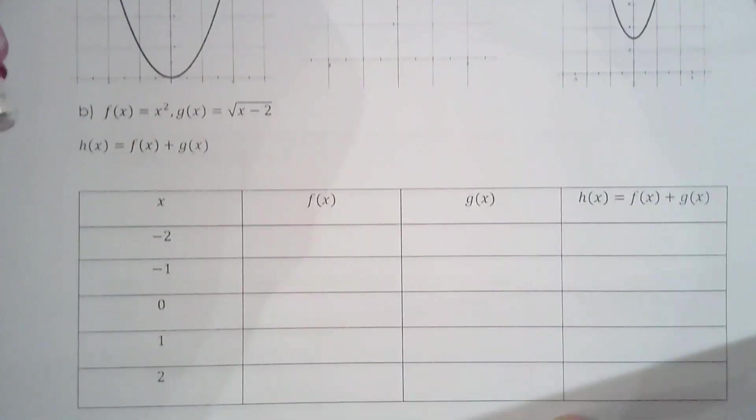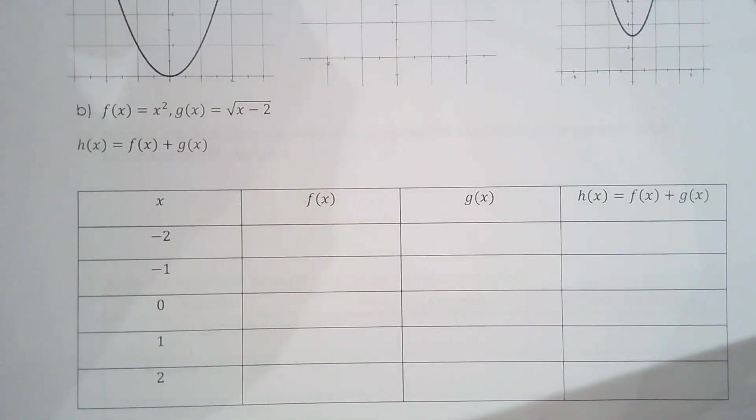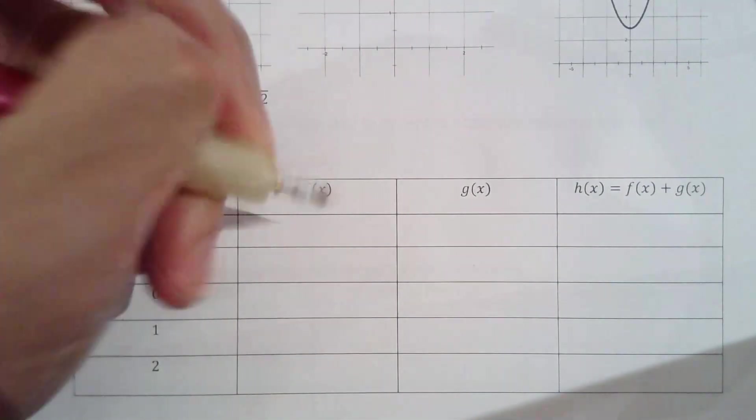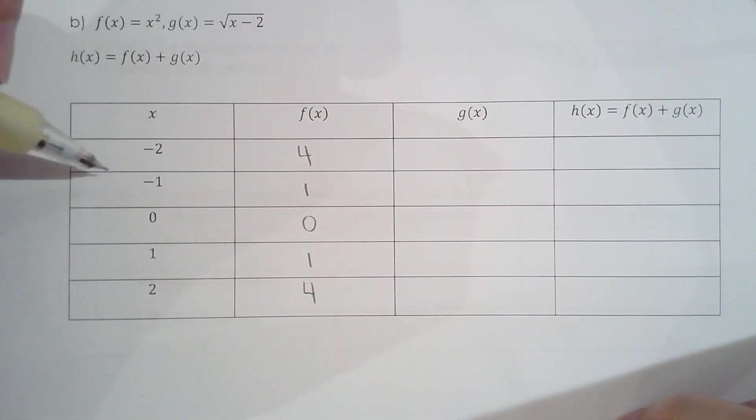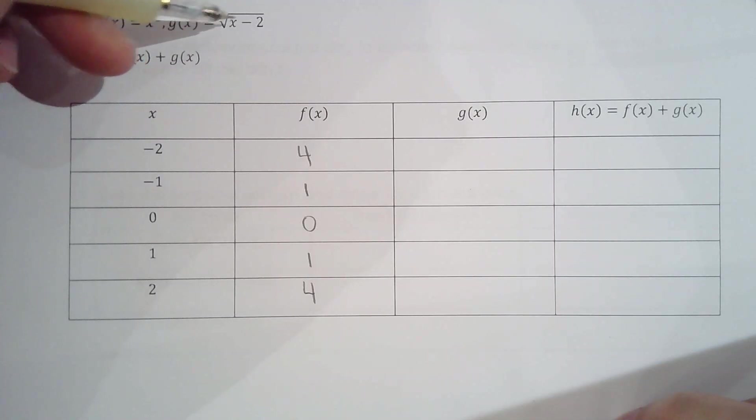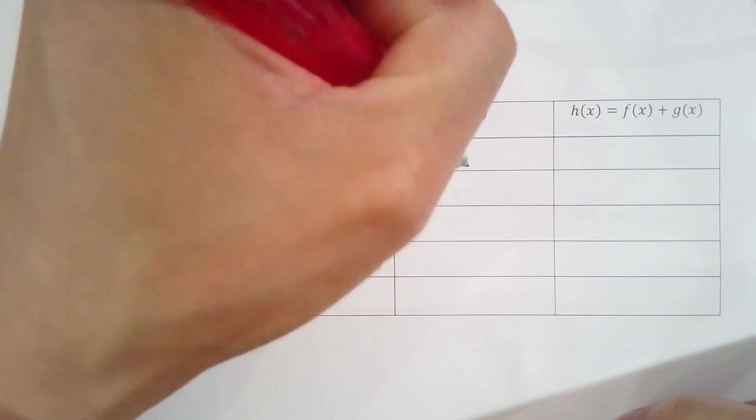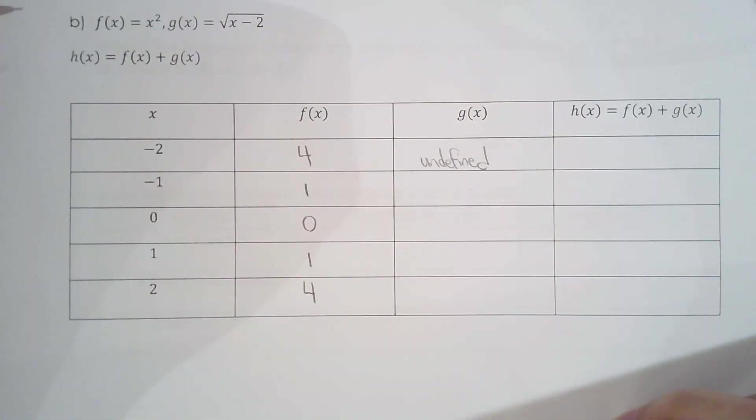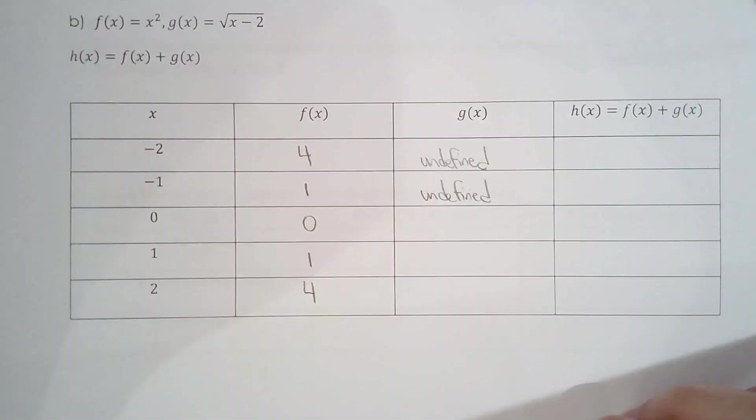What if we have f of x is x squared and g of x is the square root of x minus 2? f of x, once again: 4, 1, 0, 1, 4. And g of x: g of negative 2, negative 2 minus 2 is negative 4, root of negative 4, if we're working with real numbers here, then g of negative 2 is undefined. What about negative 1? Undefined. g of 0, undefined.